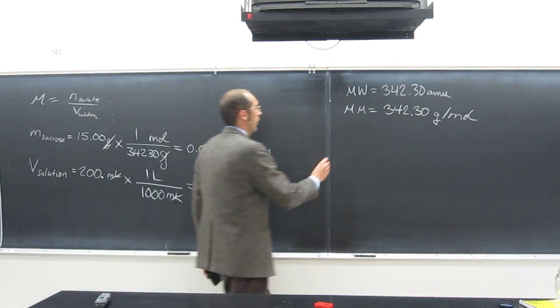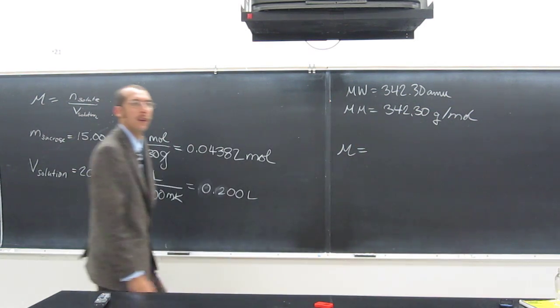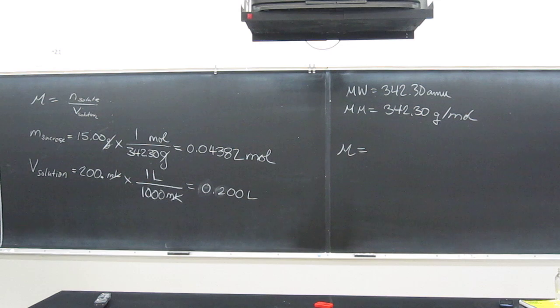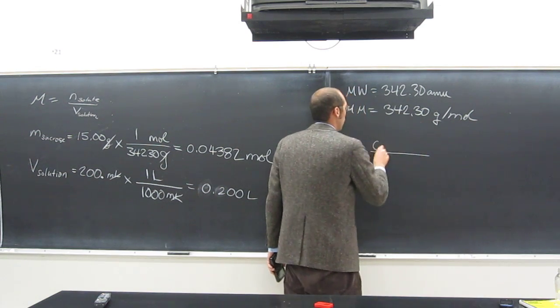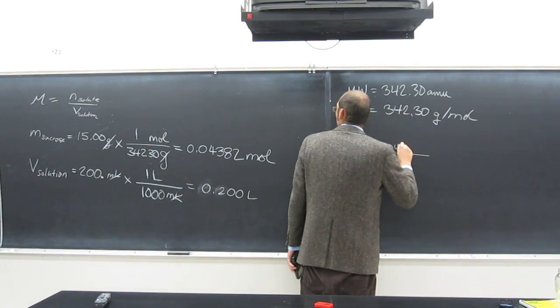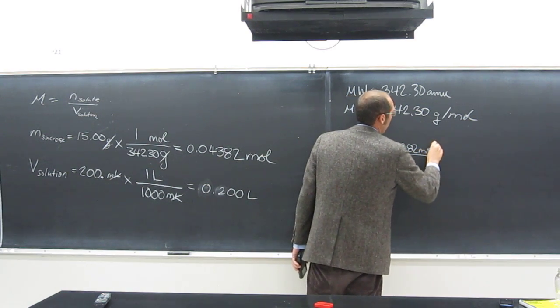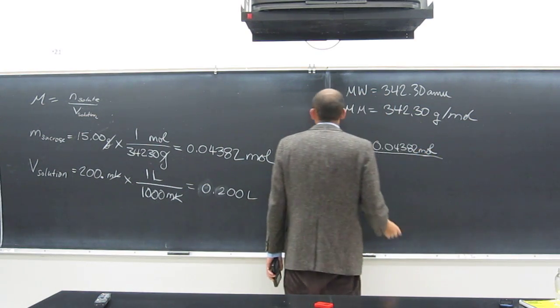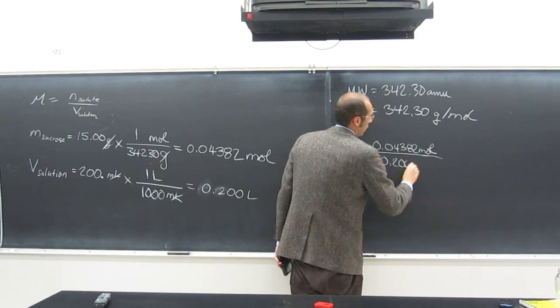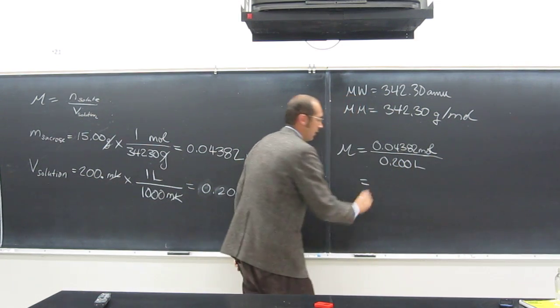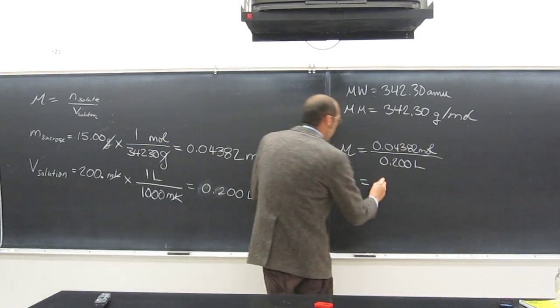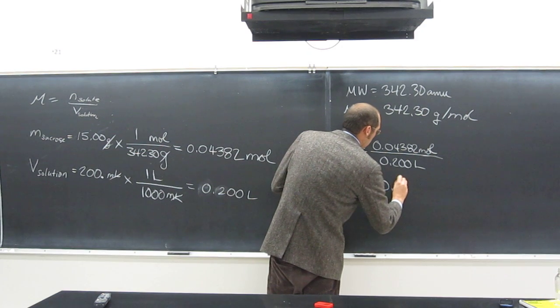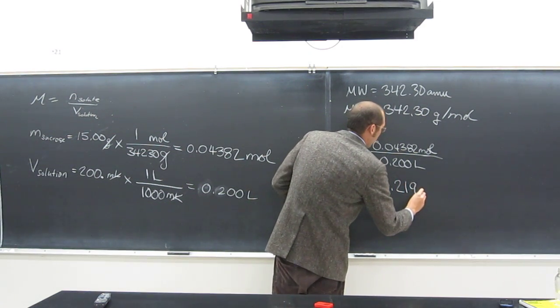And then how do we do molarity? Do we have everything that we need for molarity? Yeah. How do we do it? What do we put on top? Moles. So, what kind of moles? How many? 0.04382 moles. And do we have the volume? Yes. And liters? Yes. Very good.